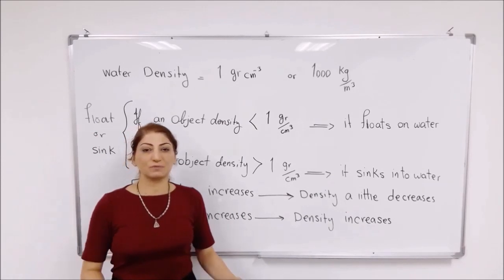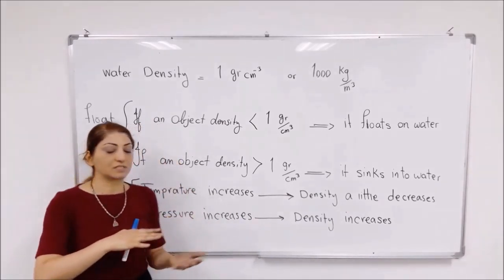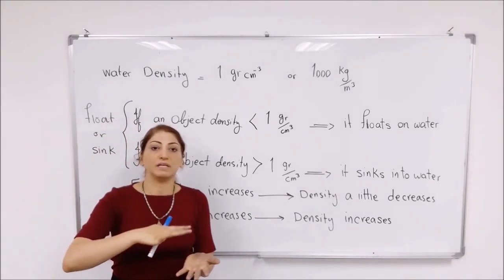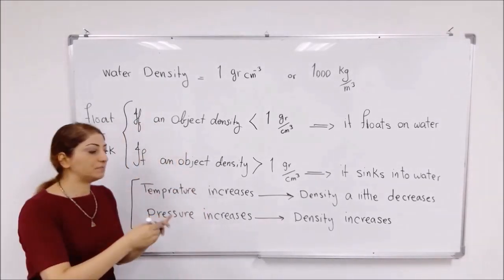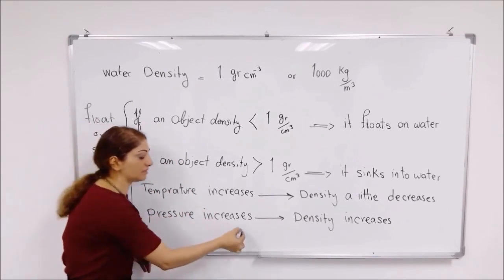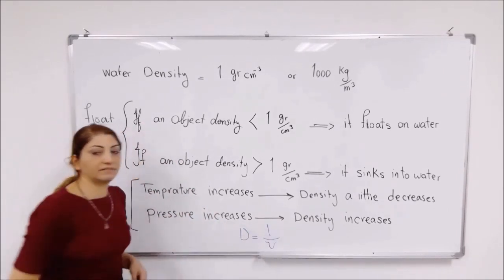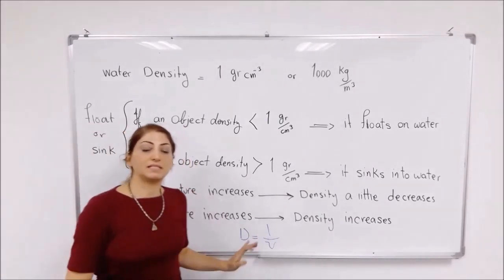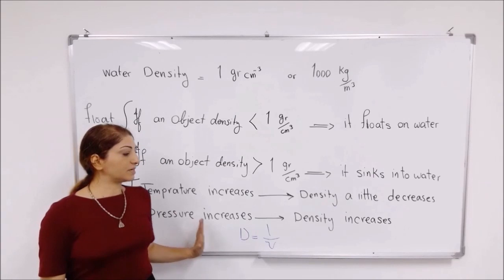When the pressure increases, the volume of the object slightly decreases. Since density and volume are inversely related, when volume decreases, density increases. That is why an increase in pressure leads to an increase in the density of water.